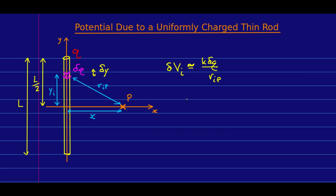So, as with the field, I can say that there is some uniform charge density, linear charge density lambda, which is just Q over L, and I can express delta Q as just lambda delta y. And RIP just comes from Pythagorean theorem. It's going to be root x squared plus yi squared.